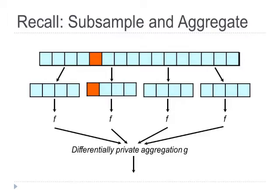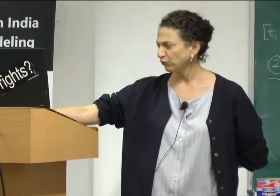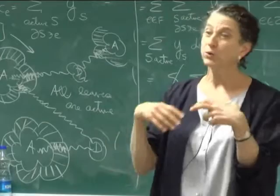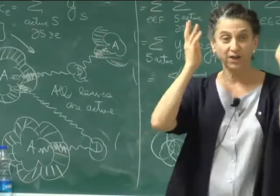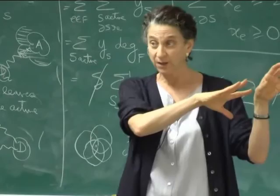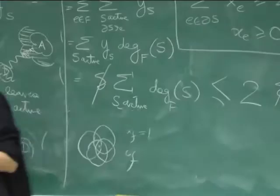Remember the subsample and aggregate paradigm of Nisim, Raskodnikova, and Smith. The idea was: you have some function you don't necessarily understand, and you want to compute f of your database privately. You have no idea what the sensitivity of your function is. So you take your data, partition it randomly into blocks, apply the function to each block independently, and then somehow aggregate the results in a privacy-preserving way. That was the paradigm.